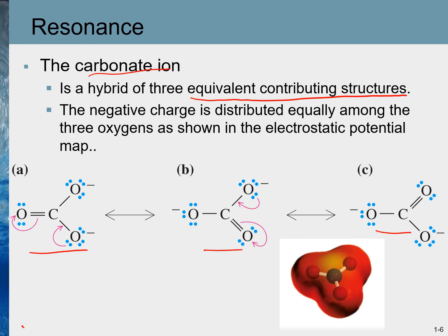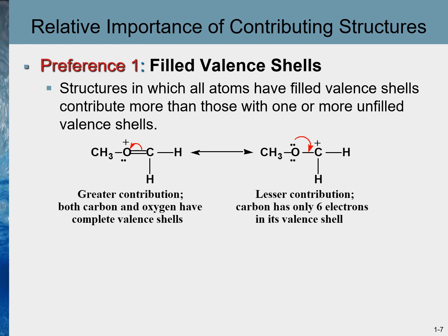In the case of carbonate ion, the negative charge is distributed equally among all three oxygen atoms. Hence, the resonance hybrid is a symmetrical structure, and the electron charge density — represented by the red cloud — is distributed equally throughout the molecule. When contributing structures do not contribute equally, there are four ways to predict which structure contributes more. The first preference is a filled valence shell: structures in which all atoms have filled valence shells contribute more than those with unfilled valence shells.